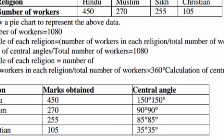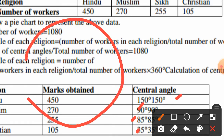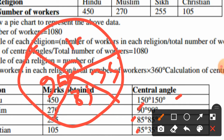The central angles are: Hindu 150°, Muslim 90°, Sikh 85°, and Christian 35°. Using these angles we draw the pie chart with sectors of 150°, 90°, 85°, and 35°.